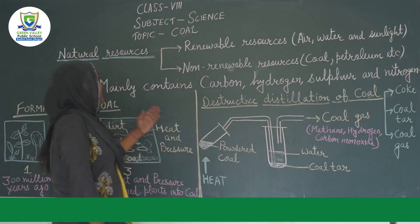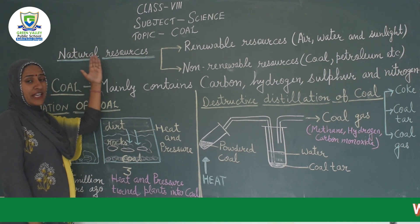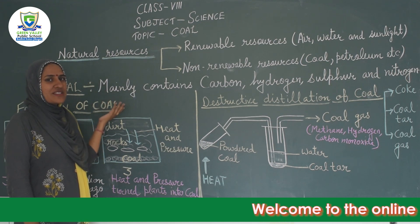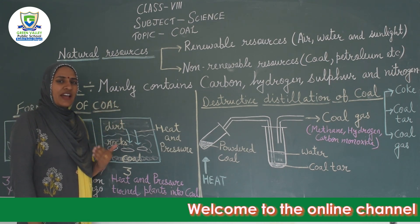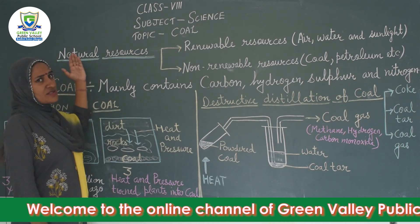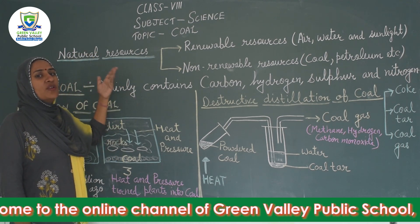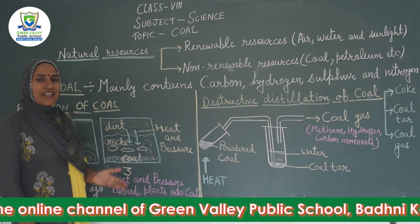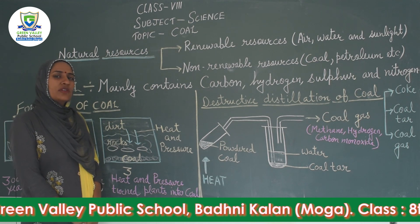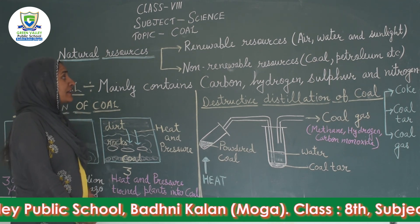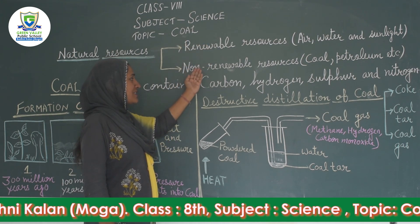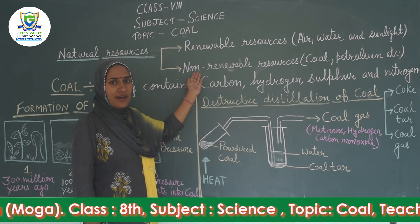As it is clear from the name, natural resources — what are resources? Resources are the materials that help us to live on the earth. The natural resources that we get from nature include air, water, sunlight, and soil. These are examples of natural resources. Natural resources are of two types: renewable and non-renewable resources.